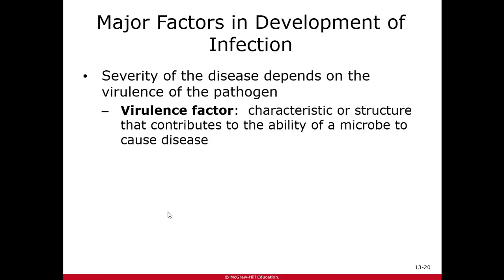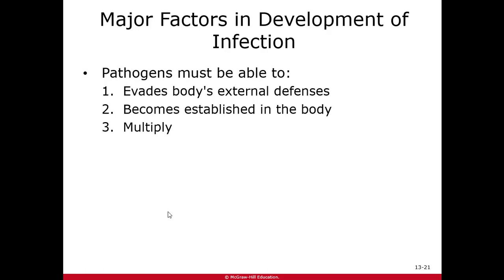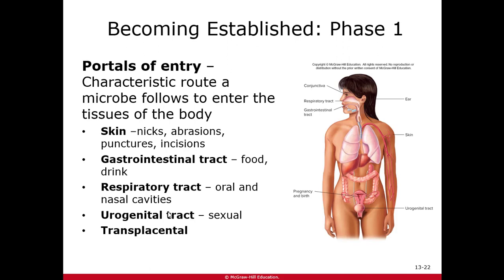Examples of virulence factors: if a bacterium has a capsule, it can hide from our immune system and slow down or prevent phagocytosis. If it can produce a toxin, an enzyme, or allow it to stick to surfaces better — those are all virulence factors making it more likely to cause disease. For an organism to cause disease it must do three things: get in the body past external defenses, become established and find a home, then multiply — causing an infection. How it gets in is called portals of entry.